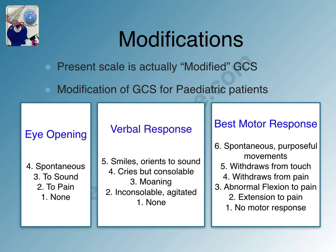Regarding modifications — the current scale is already a modified version. The distinction between M4 and M3 was introduced subsequently. Originally the Glasgow Coma Scale had a total score of 14, which was expanded to 15 by adding the abnormal flexion response to painful stimulus. The scale also needs modification for pediatric patients, who may not engage in meaningful conversation or follow motor commands in the same way as adults.